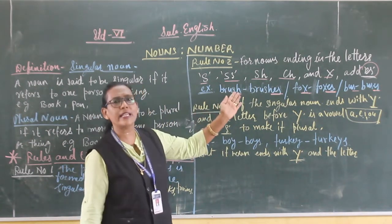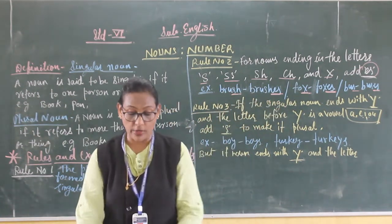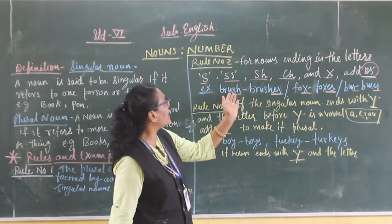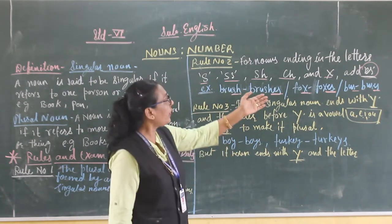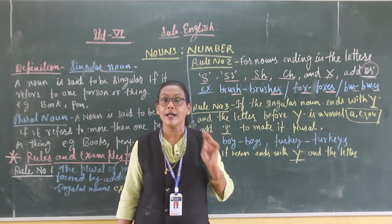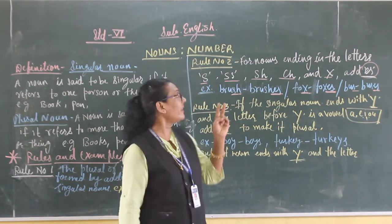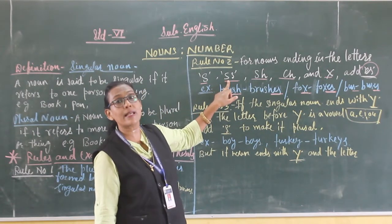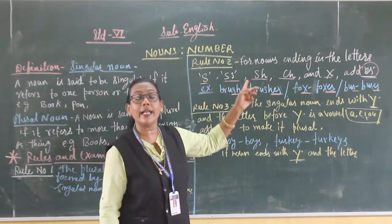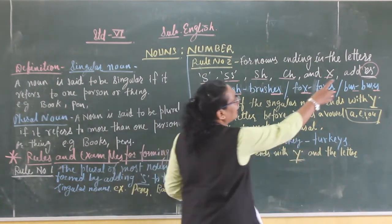Can you see the examples? BENCH, B-E-N-C-H, ending with CH, so we write BENCHES. BUSH, B-U-S-H, ending with SH, so BUSHES. PRINCESS, ending with SS — double S — so we add ES to make PRINCESSES. Even if a word ends with double S, we still add ES.